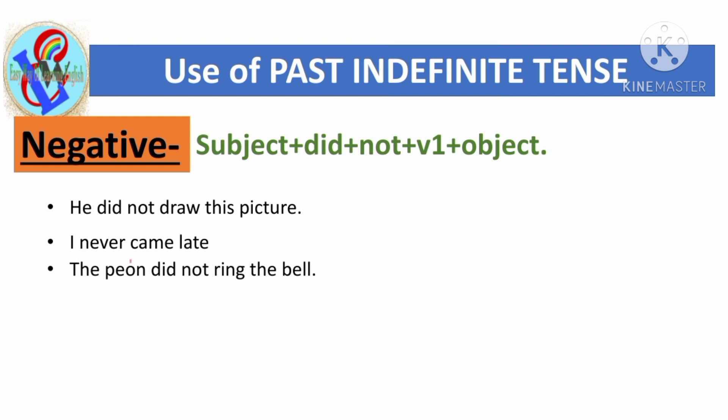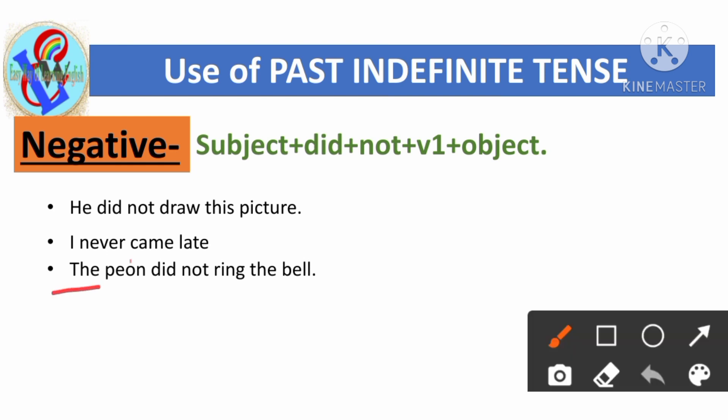'The peon did not ring the bell.' Here 'the peon' is the subject, followed by 'did not', then the first form of the verb 'ring', and 'the bell' is the object.